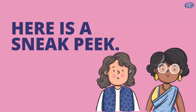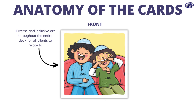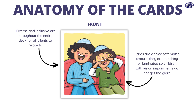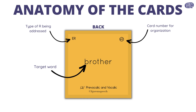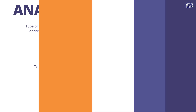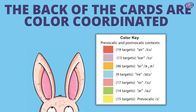Let's take a closer look at the Pre-Vocalic R and Vocalic R deck. The front of our cards includes artwork that has been carefully thought through and designed by our very talented artists. The cards themselves are a durable thick matte texture, which is also great for children with visual impairments because there will be no glare as compared to shiny cards. Here is the back of that same card. You can see the organizational elements along with the target word on the back of each card. The backs of the cards are also color-coded so you can find the target words you need quickly and easily.